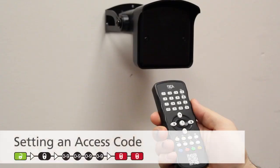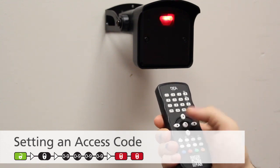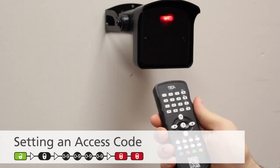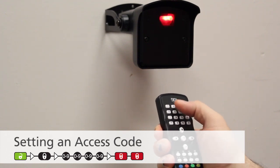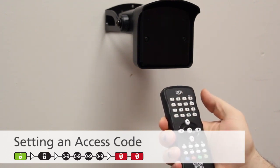To set an access code, press unlock, then lock, followed by your numeric code of choice. Then press lock, lock. Code set can be 1 to 4 digits.